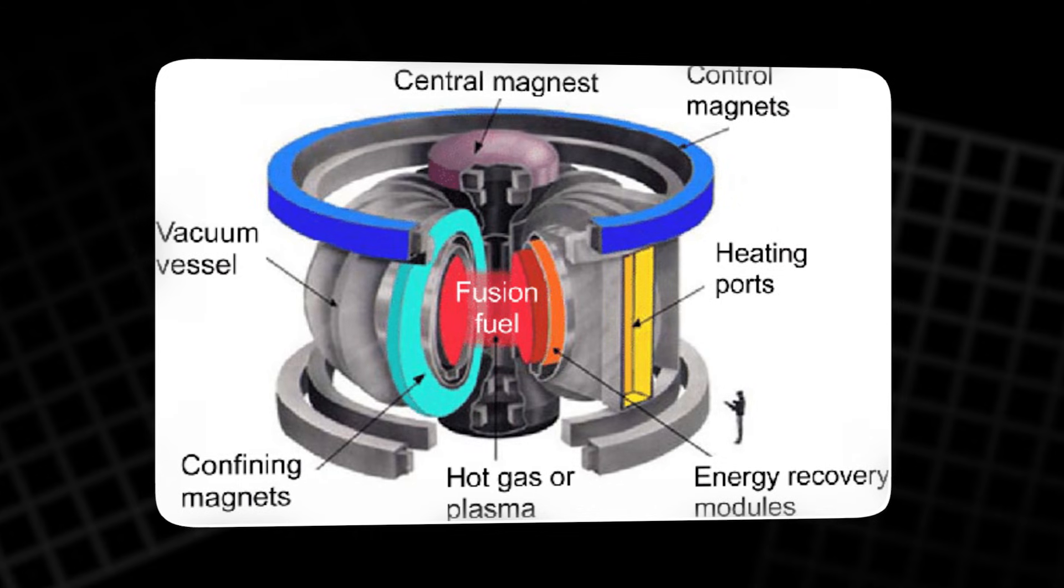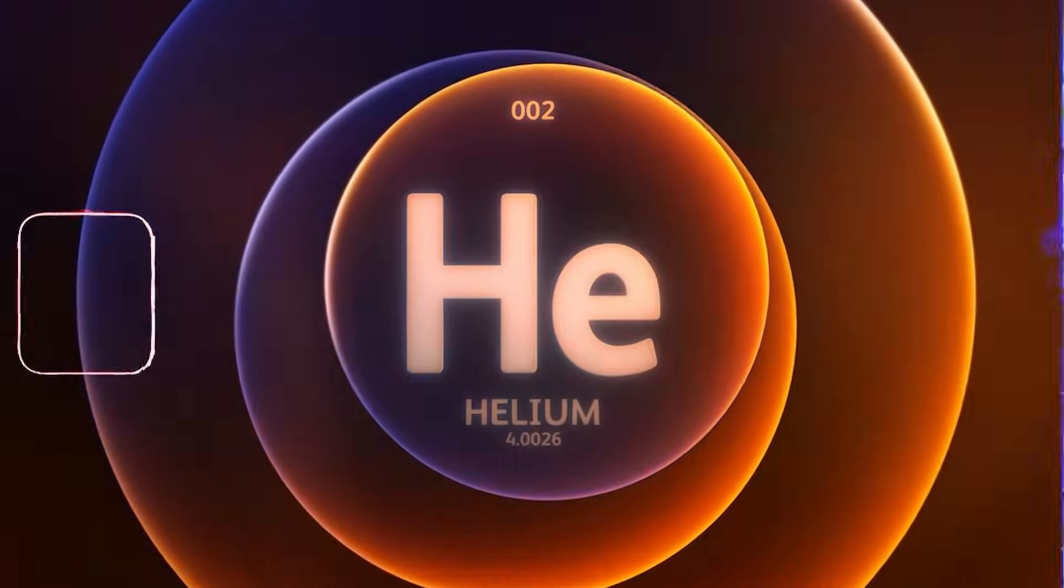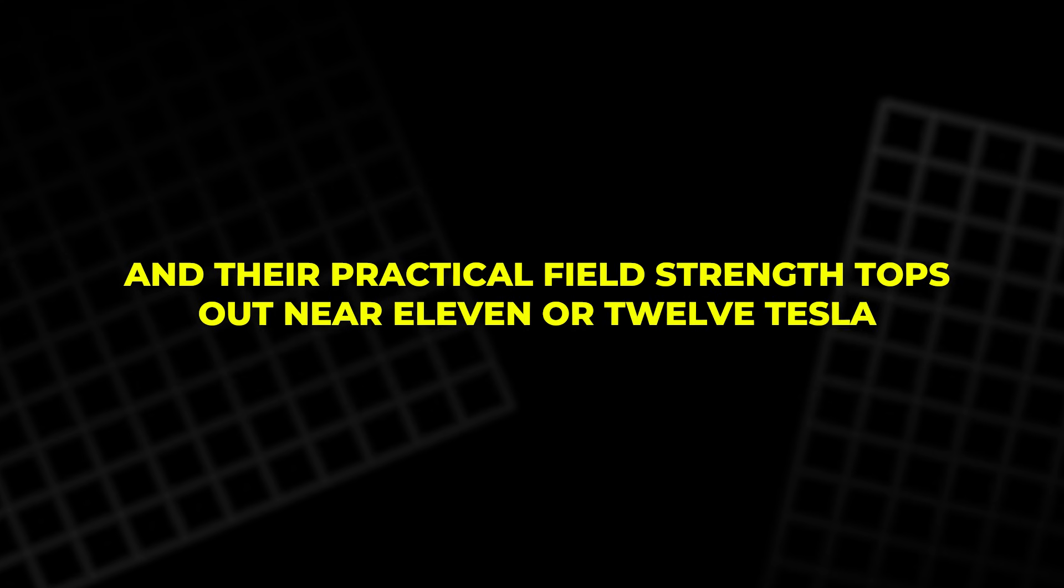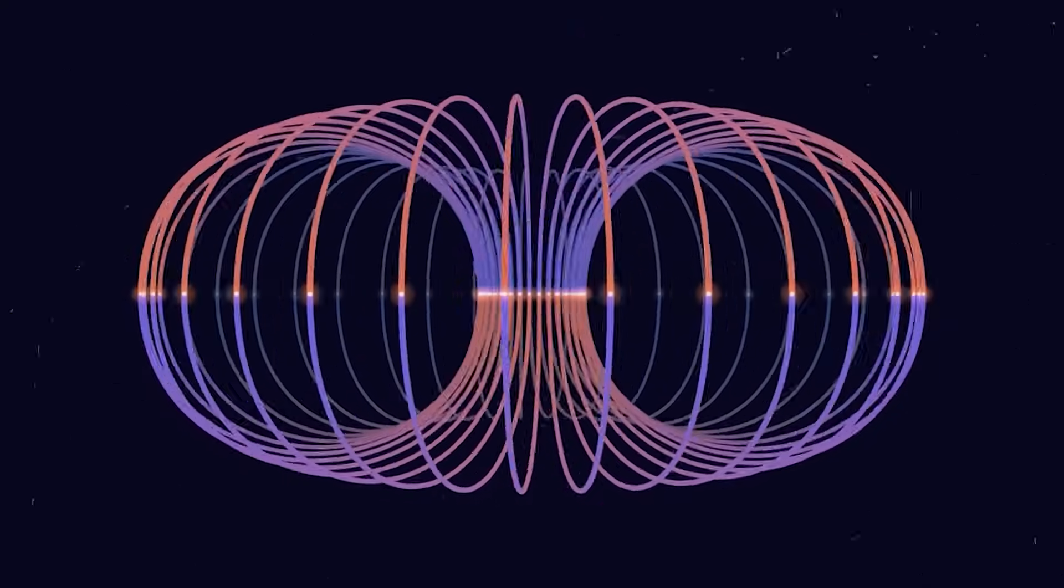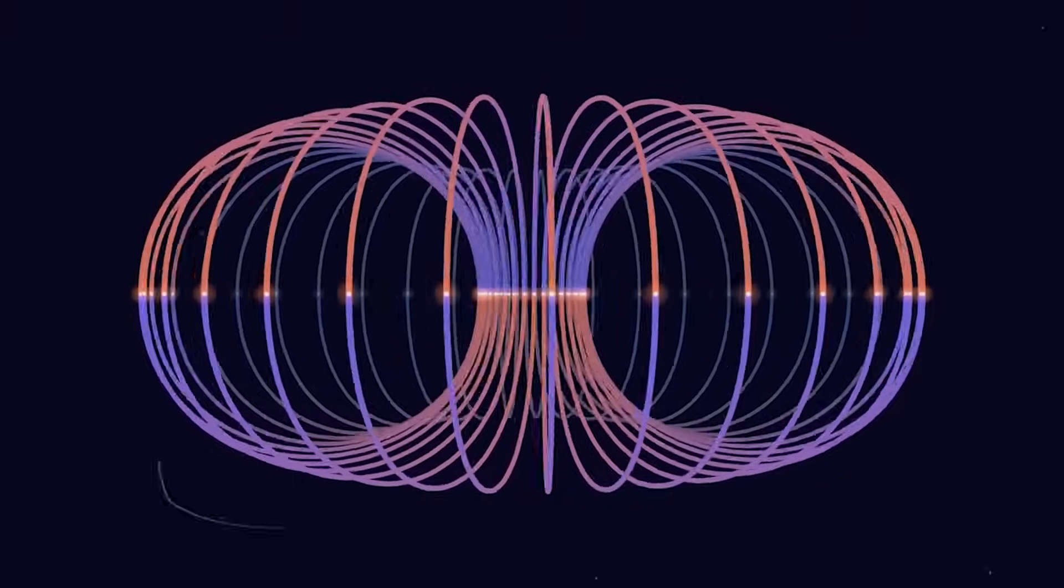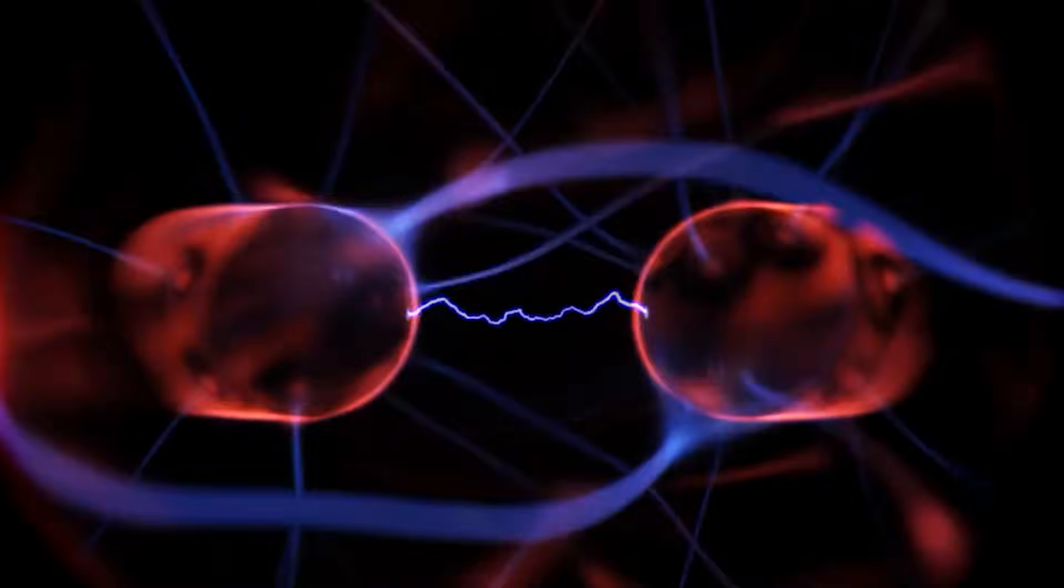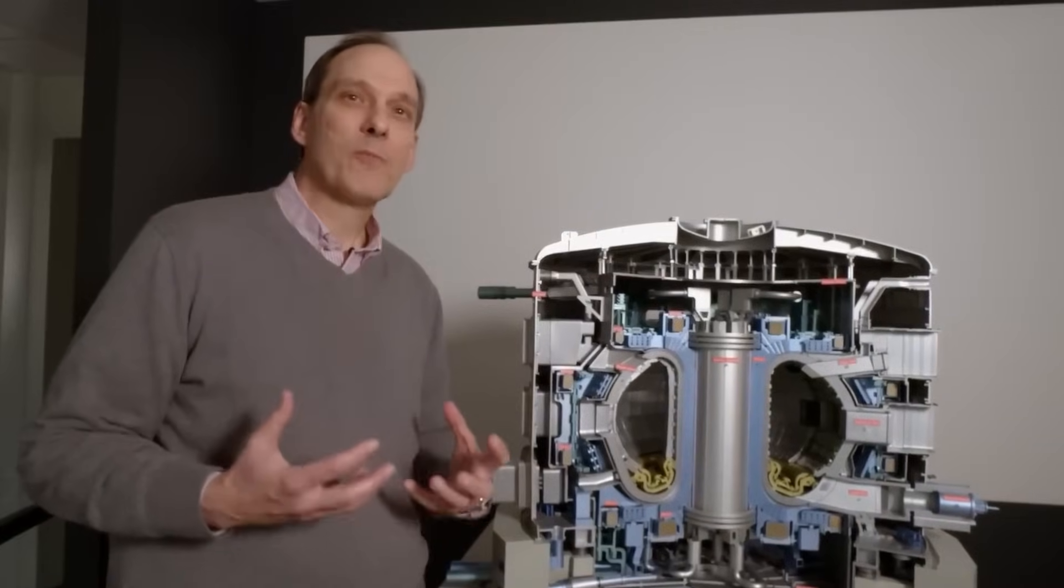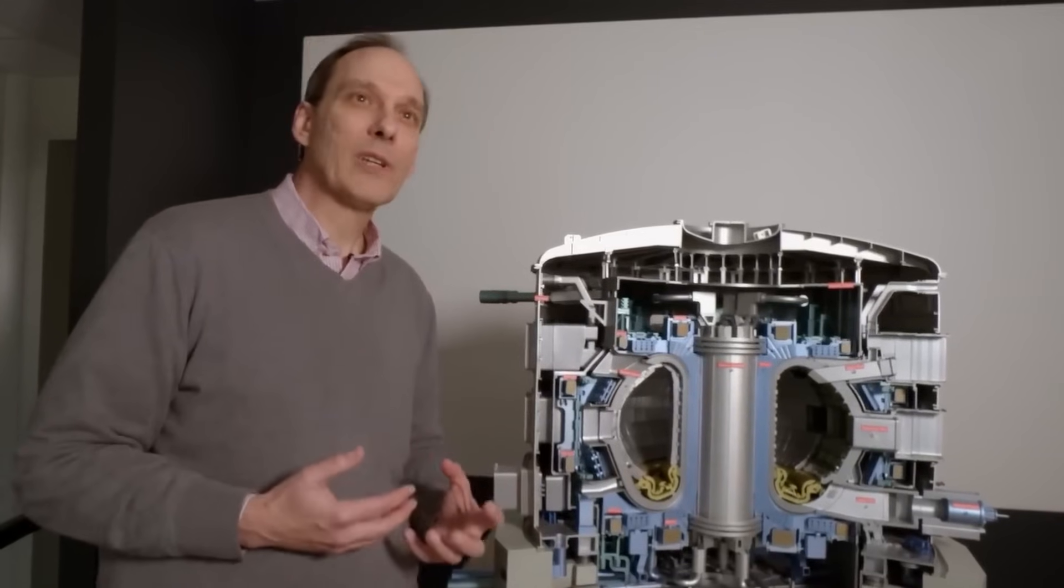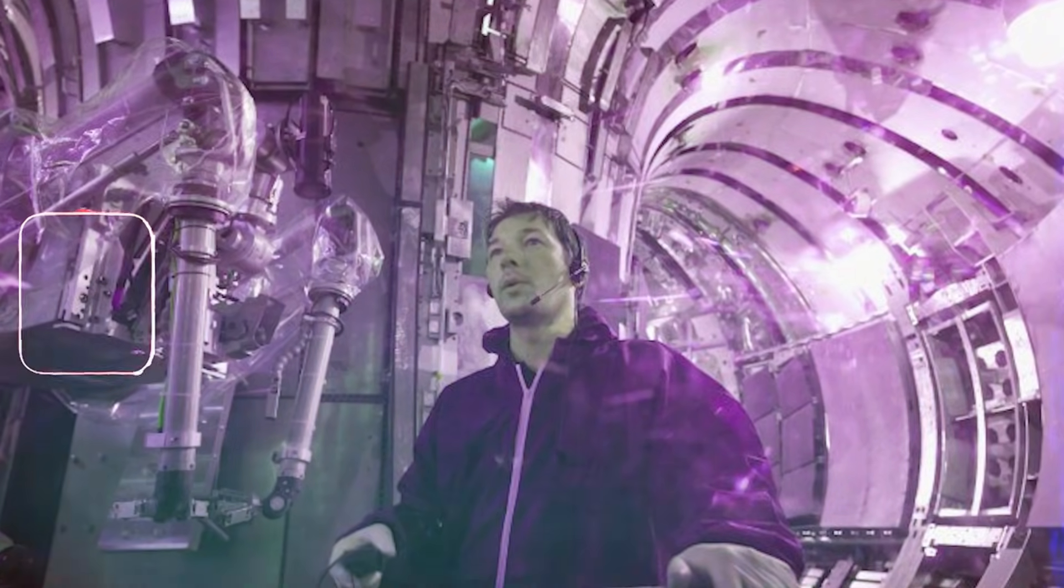Traditional tokamak magnets are superconductors, but they're picky. They must be cooled with liquid helium to about 4 Kelvin, and their practical field strength tops out near 11 or 12 Tesla. That limit mattered because confinement gets dramatically better as the magnetic field rises. A common scaling says energy confinement improves roughly with the fourth power of the magnetic field. So if you double the field, you can get up to 16 times the confinement performance. That's not a small gain. It's a size-changing gain.